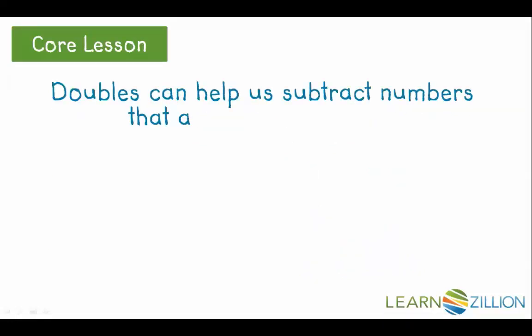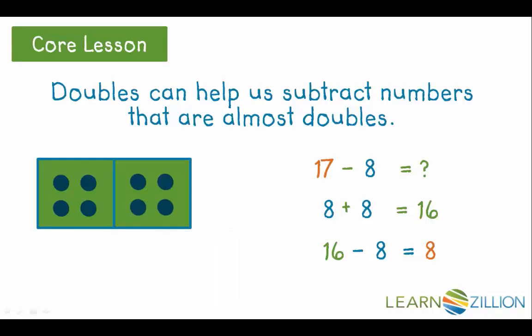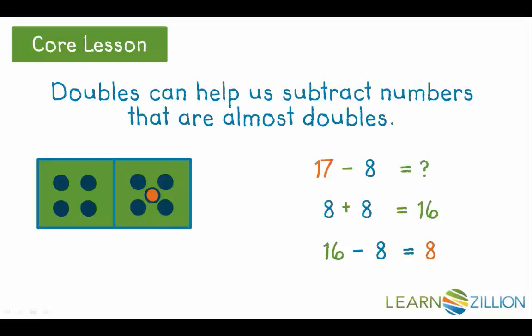Doubles can help us subtract numbers that are almost doubles. 17 minus 8. What doubles fact will help me? 8 plus 8 equals 16. 16 minus 8 equals 8. There's one more. 17 minus 8 equals 9.